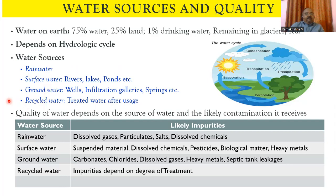What exactly are these? Rainwater is what is obtained here. Surface water is in the form of lakes, ponds, and rivers. Groundwater will be in the form of wells, infiltration galleries, and springs. Recycled water means you are treating wastewater and then recycling it for putting into beneficial use.